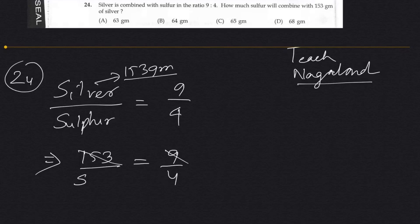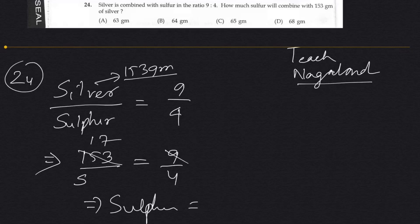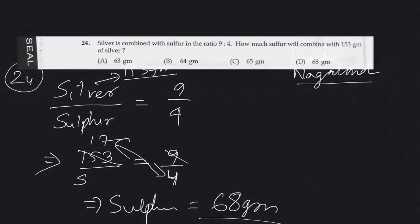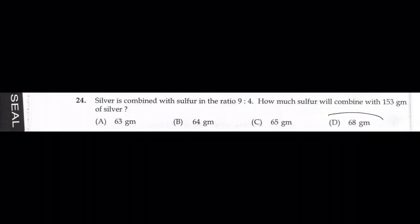9 ones are 9. 153 divided by 9 gives 17. So sulfur equals 17 times 4, which is 68. Okay, it's easy. So it's 68.